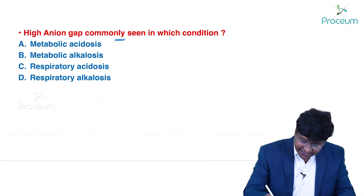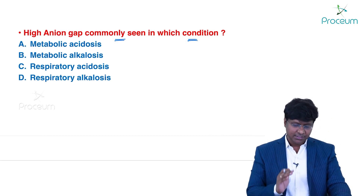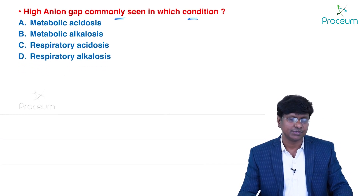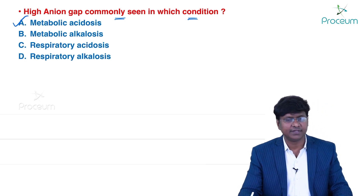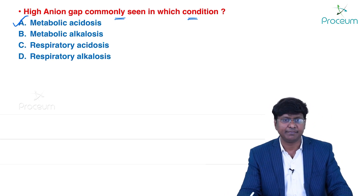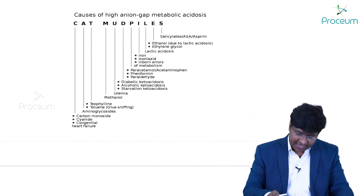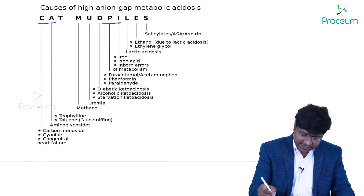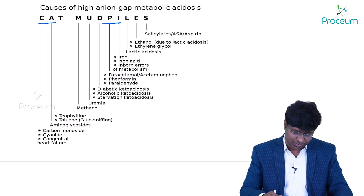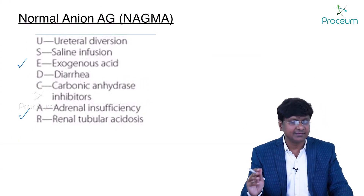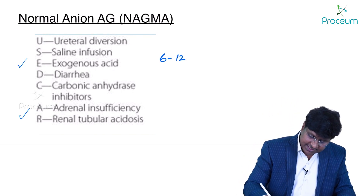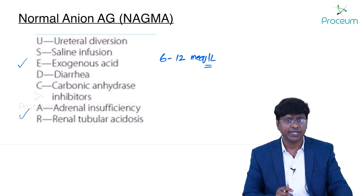A simple question: high anion gap is commonly seen in which condition? The answer is metabolic acidosis. There are two forms: high anion gap metabolic acidosis (HAGMA) — remembered by the mnemonic CAT MUD PILES — and normal anion gap metabolic acidosis — remembered by USED CAR. Normal anion gap is 6–12 mEq/L.